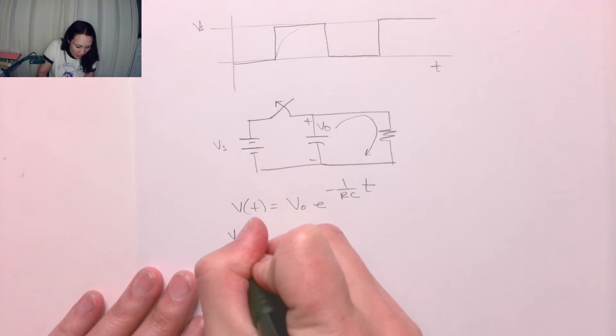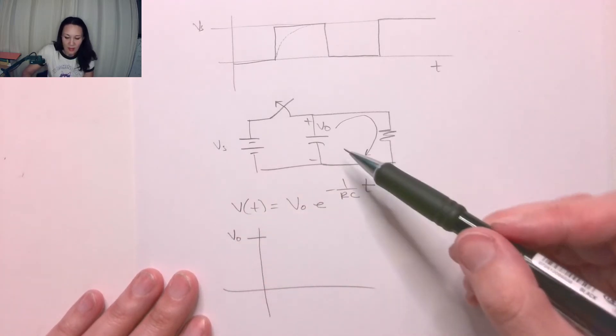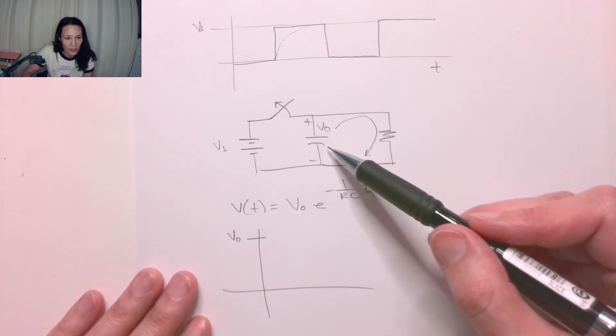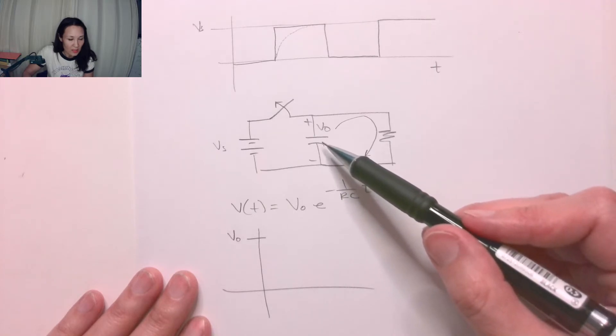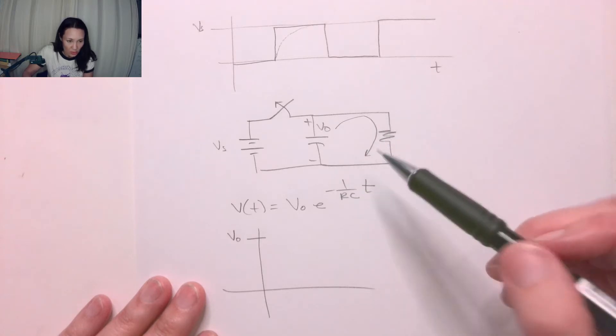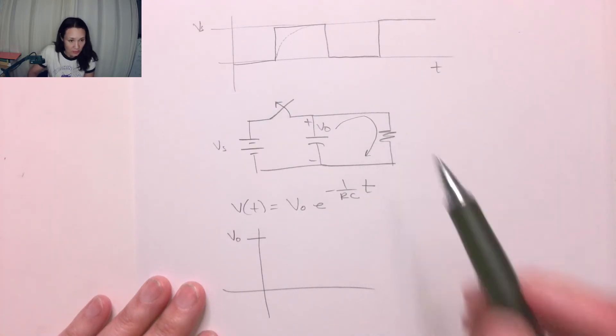It does not stay constant because there is no continual voltage source. It's not like a regular battery that continues to provide a steady source. It just starts with V₀, which then discharges and dissipates as heat through this resistor.